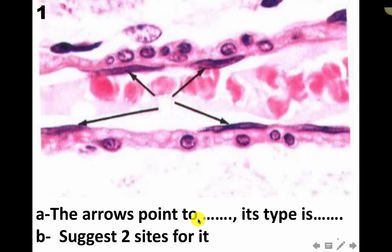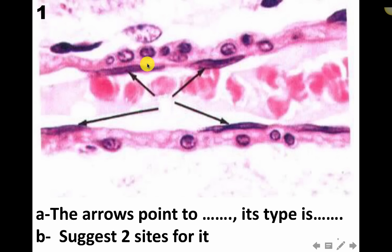The arrows point to the epithelium - its type is epithelium, and we say endothelium because that is the specific name for the epithelium lining the blood vessels and the heart. Its type is simple because it is one layer, and squamous because we have flat nuclei. Flat cells suggest sites like lung alveoli, Bowman's capsule, and serous membranes.